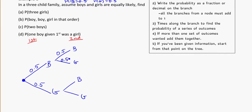Probabilities are still the same, because these are independent events, and it doesn't really matter how many children this person has. They still have a one half chance of having a boy or a girl.